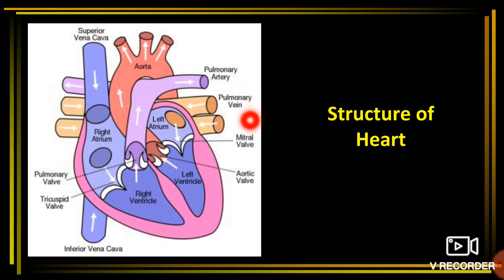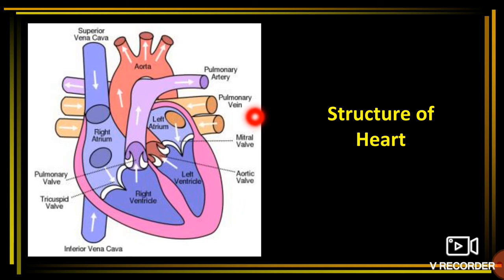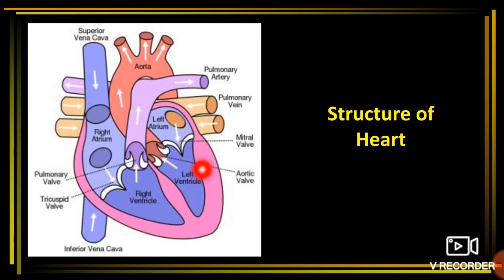The pulmonary vein is a vein but it carries oxygenated blood, while the pulmonary artery is an artery but it carries deoxygenated blood. The pulmonary vein carries blood from the lungs to the left atrium, from there it goes to the left ventricle, and from there the oxygenated blood is pumped through the aorta to the whole body.